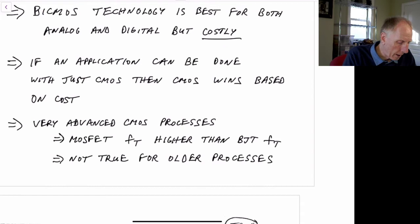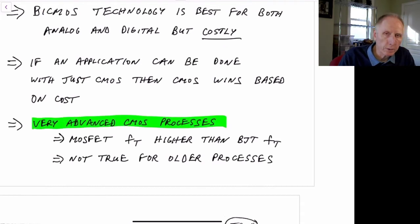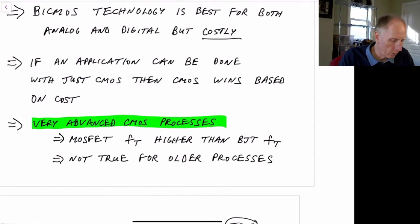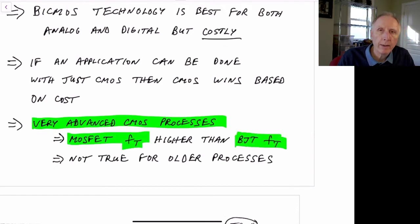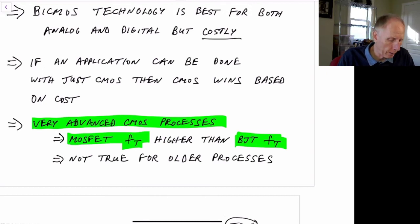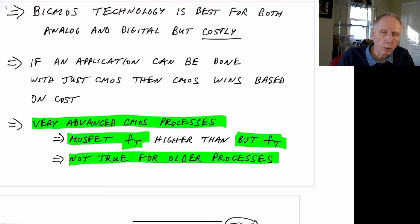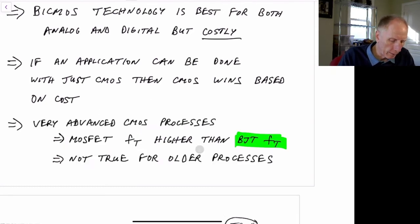BiCMOS is becoming less popular partly because in very advanced CMOS processes — 20nm, 22nm, FinFET, 16nm and below — the MOSFET FT is even higher than a bipolar FT. So the unity gain frequency you can operate at and still get gain is actually higher for CMOS in very advanced technology than for bipolar transistors. That was not the case for older technologies, where bipolar was generally faster than CMOS.